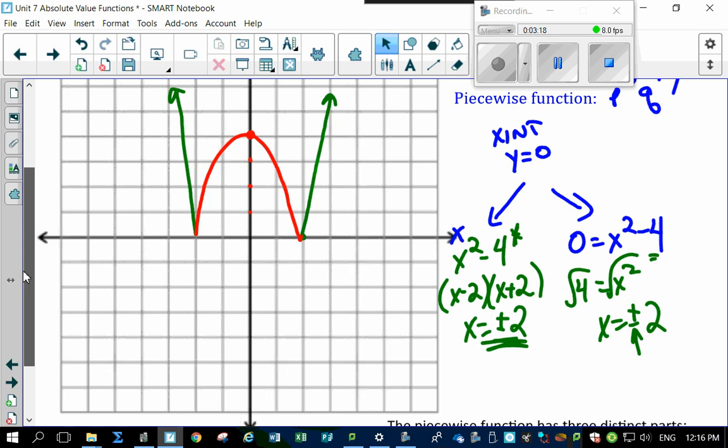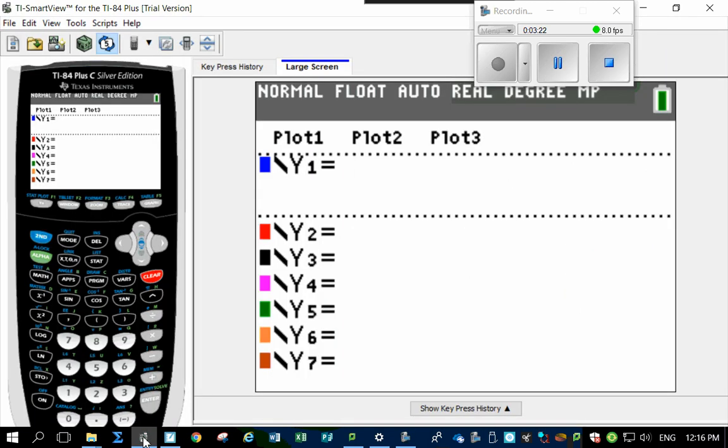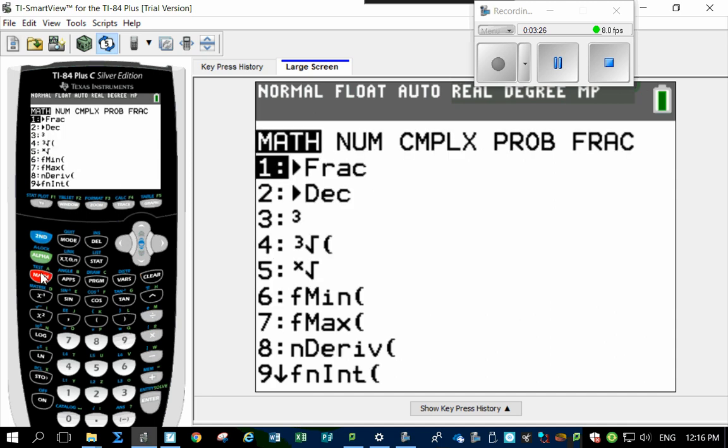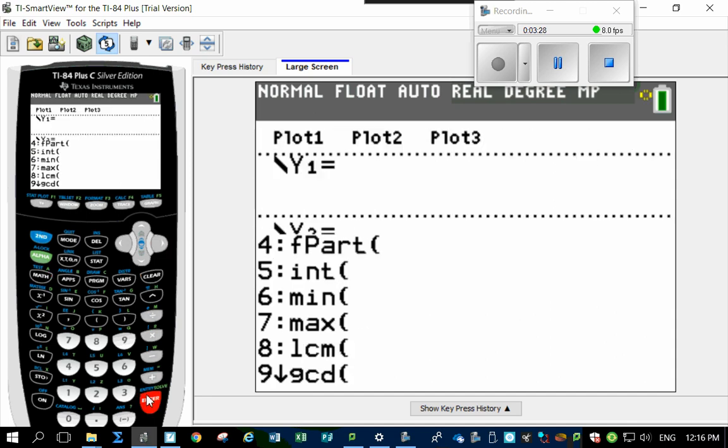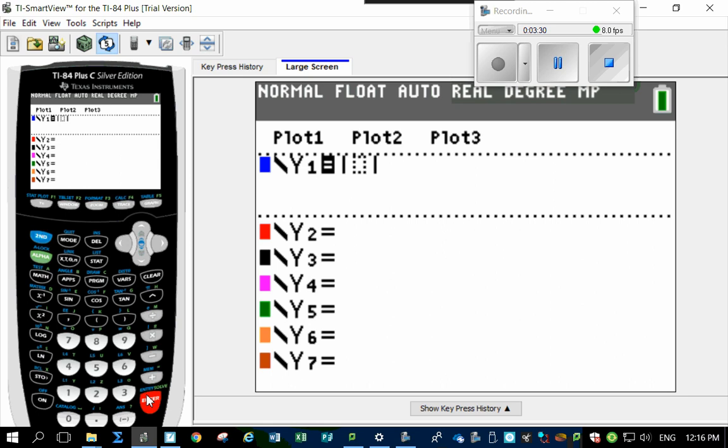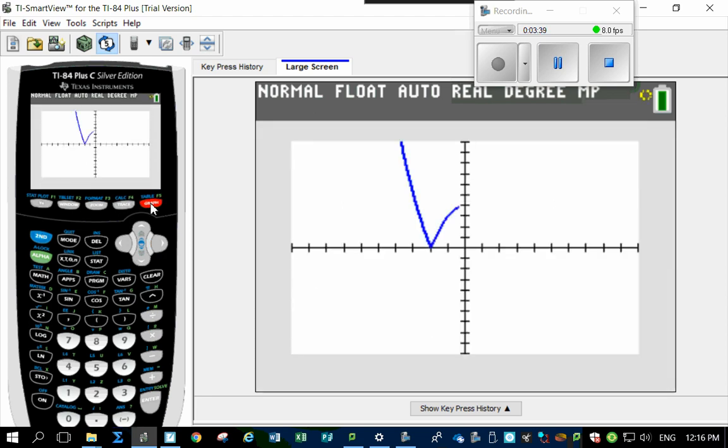And I'll prove it to you very simply by putting it into your calculator. So looking at your calculator here, let's find the absolute value. So math, go over to num, there's your absolute value, put in your equation, which was x squared minus 4. So now you know it's in the absolute value. There's a nice vertical thing sitting right there. Hit graph. And look at that. There's your W shape.